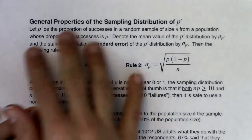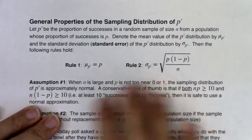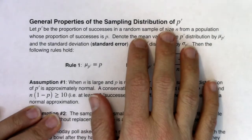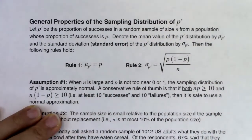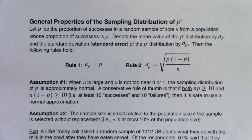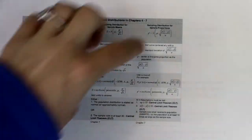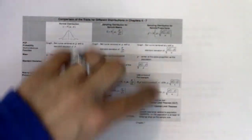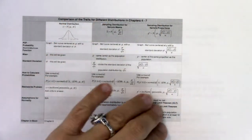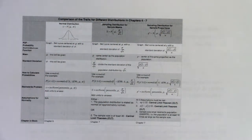We're going to pick up a bunch of properties, assumptions, and rules for the sampling distribution of p-prime. This is the one that the textbook doesn't cover all that well. On our trait table, I've put all the rules, and we're looking at the very last column. Before we get there, let's take a look back at where we've come from.